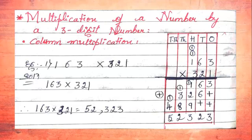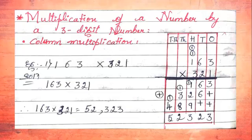We write the given number 163 × 321 and draw columns for place values. Now we multiply 163 by 321. First we multiply with the ones digit of 321, which is 1. 1 × 1 = 1 (ones), 1 × 6 = 6 (tens), 1 × 1 = 1 (hundreds). That gives 163.